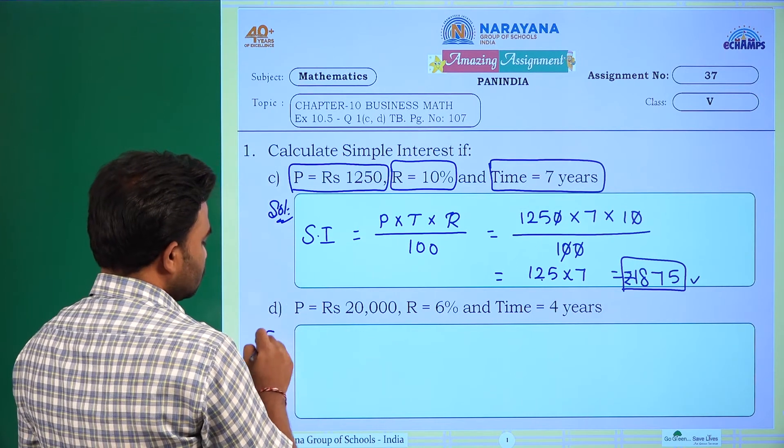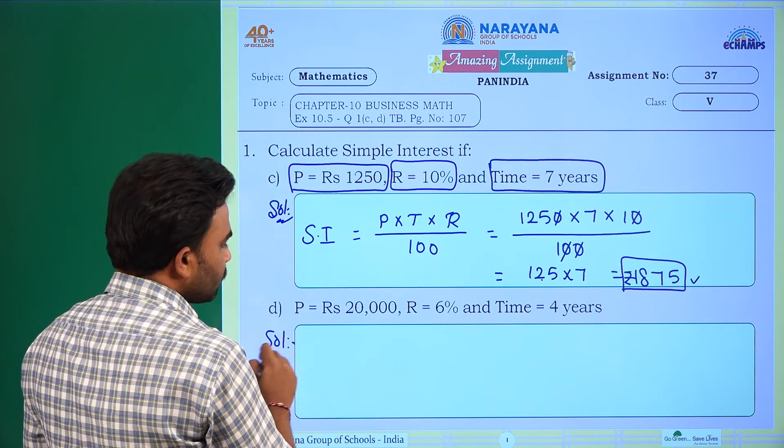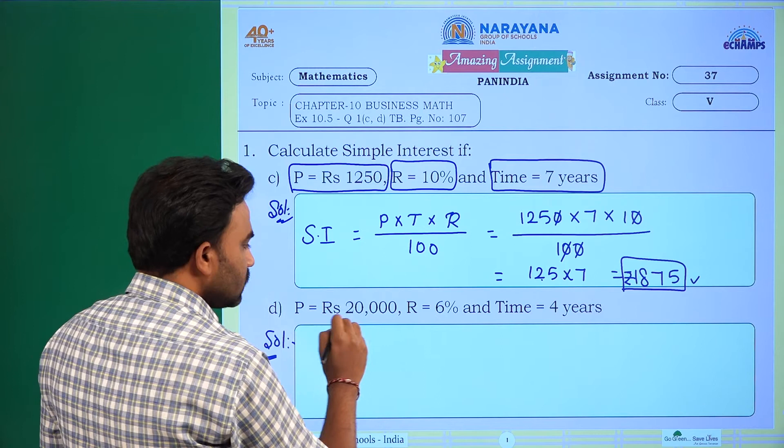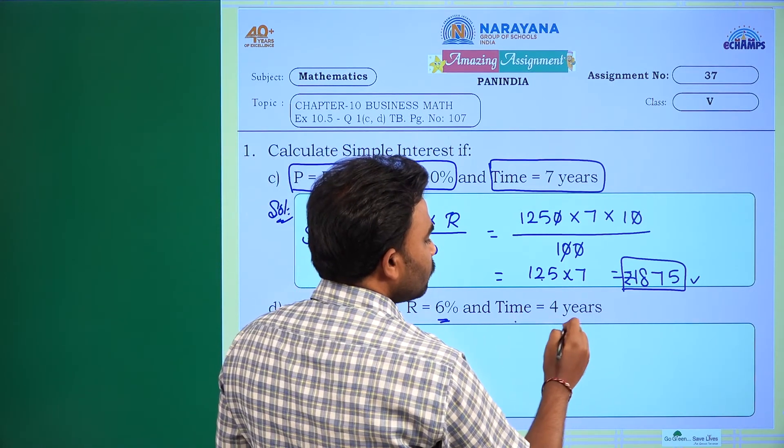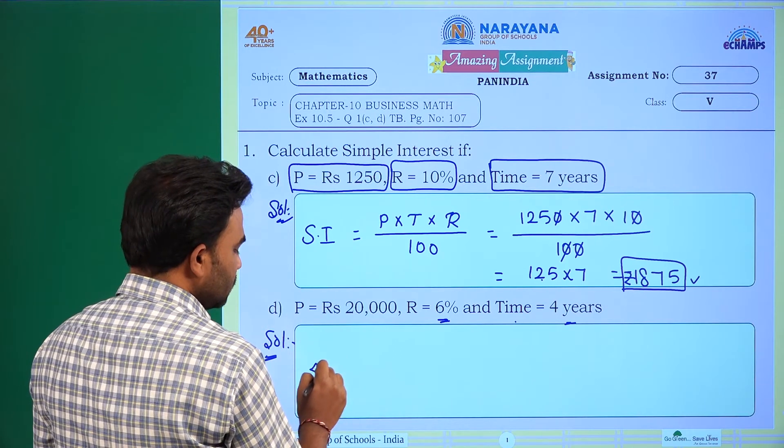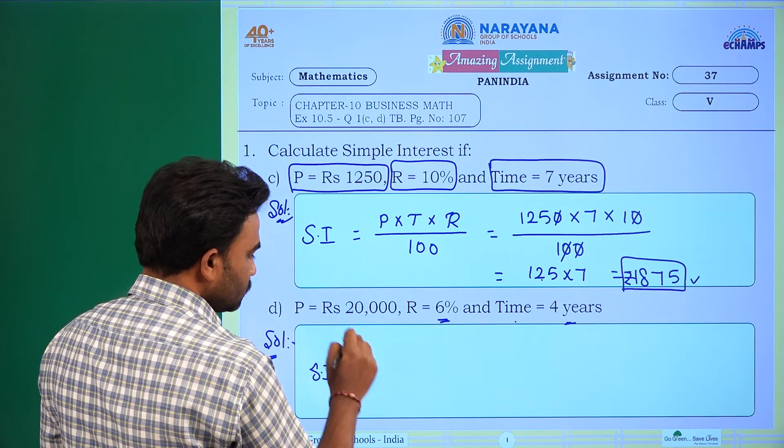Next one solution. What is the principal here? Rs 20,000, rate of interest 6%, time 4 years. Now simple interest is equal to principal into rate of interest into time by 100.